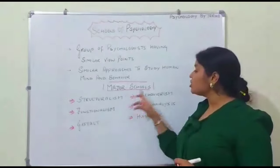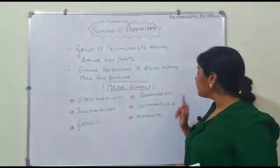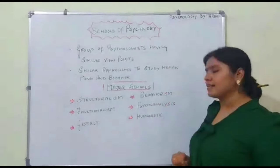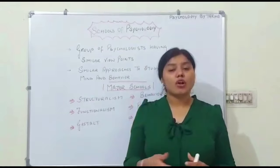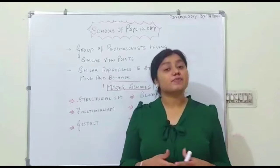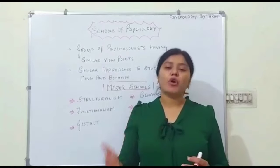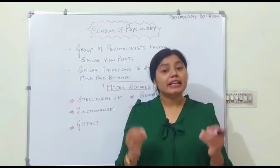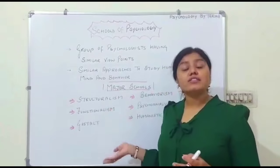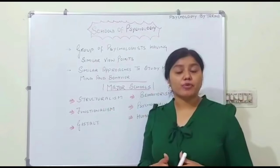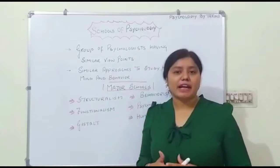As you can see, I have mentioned the major schools of psychology: structuralism, functionalism, gestalt, behaviorism, psychoanalysis, and humanistic. It is not so that there are only 6 schools in psychology. As the field expanded, new viewpoints and modern schools and modern perspectives also developed. But the foundation of psychology is based on these schools, and these schools have given a major contribution in psychology. In fact, many of these schools have developed new modern perspectives.